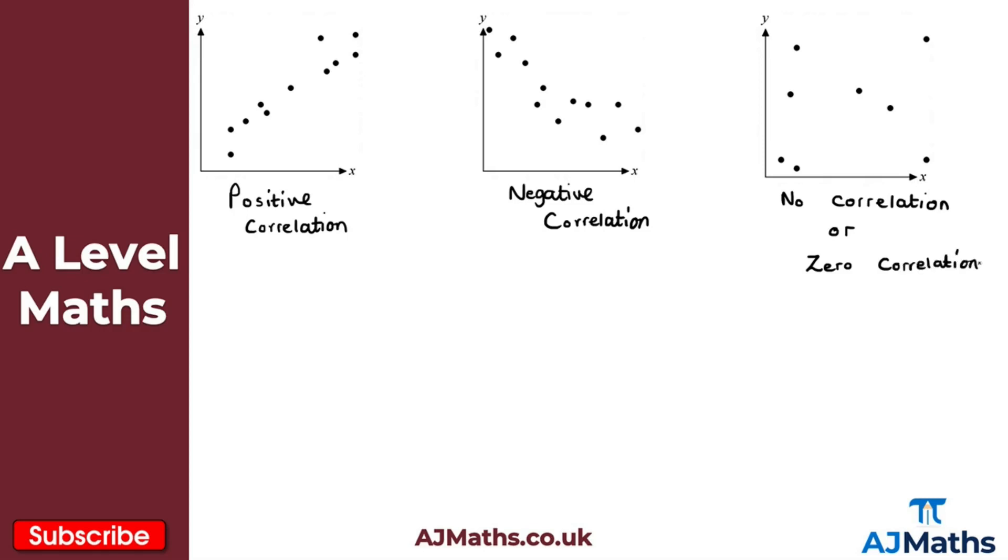So those are the three different types of correlation that we need to be familiar with. We've got positive correlation, so what we can see there is as one variable increases, the other variable also increases. We start in the bottom left and finish in the top right.